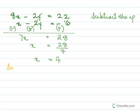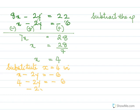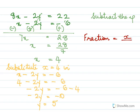To find y, substitute x equal to 4 into equation 2: x minus 2y equal to minus 6, so 4 minus 2y equal to minus 6, giving minus 2y equal to minus 10, so y equal to 5. The fraction is x over y, which is 4 over 5.